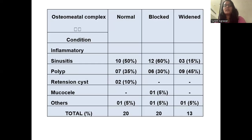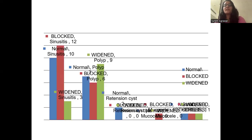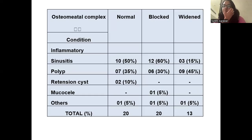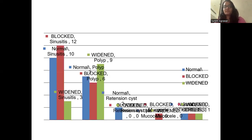This is a table depicting the normal, blocked, and widened OMC for different conditions like sinusitis, polyp, retention cysts, and mucocele. This is a graph showing normal, widened, and blocked OMC.